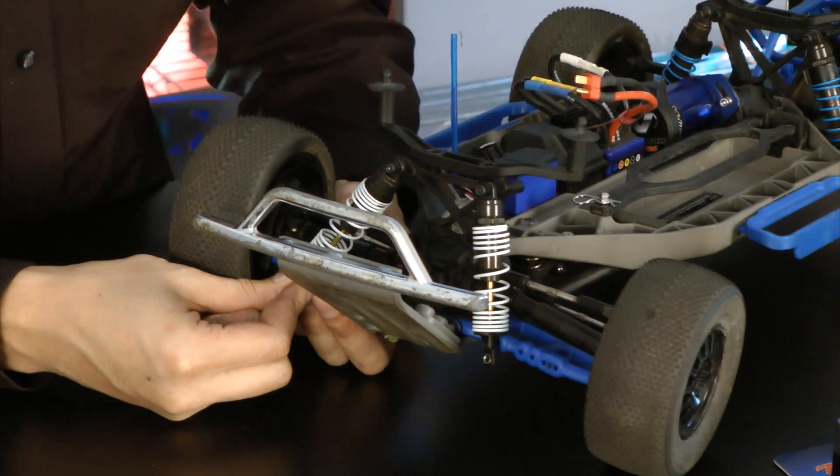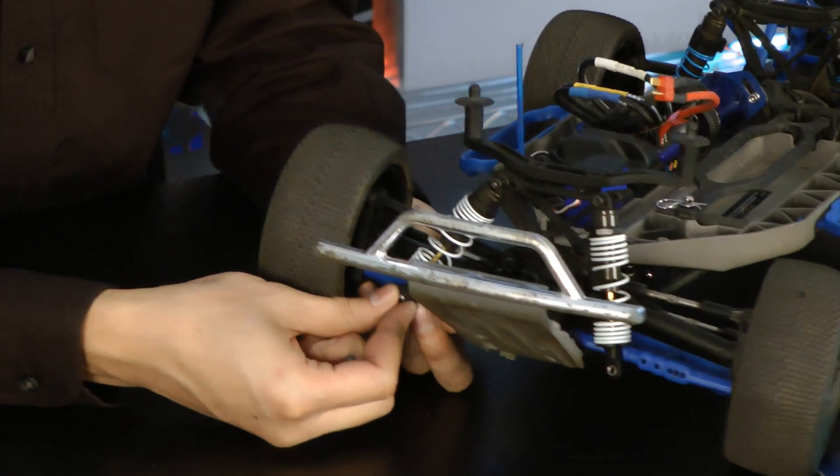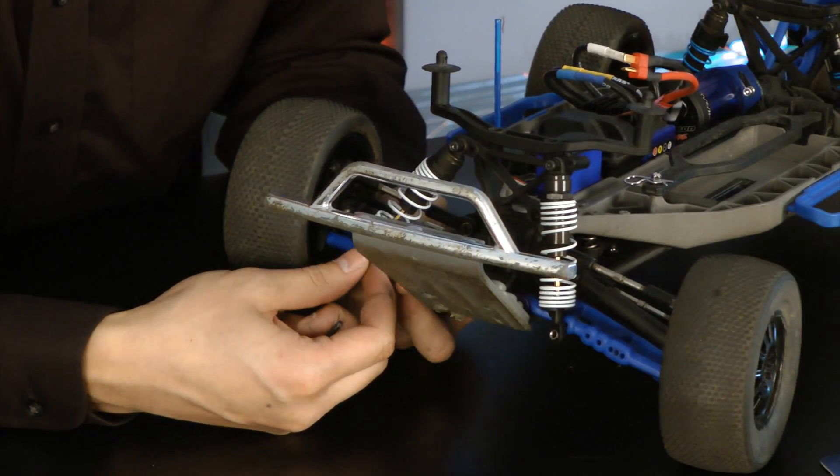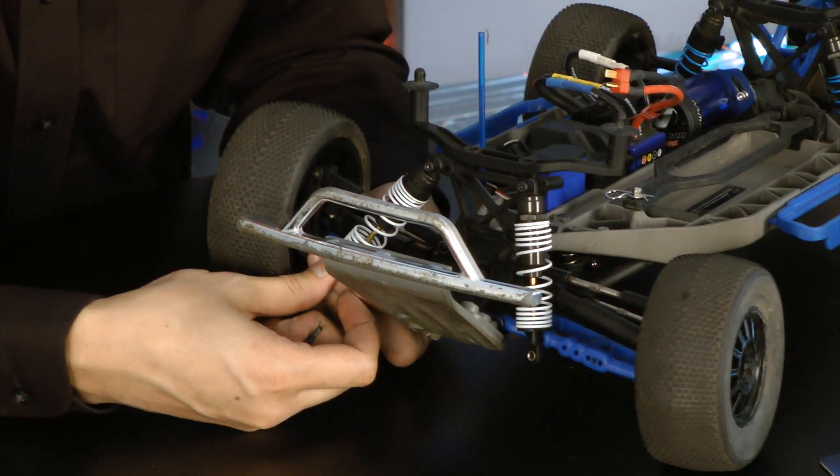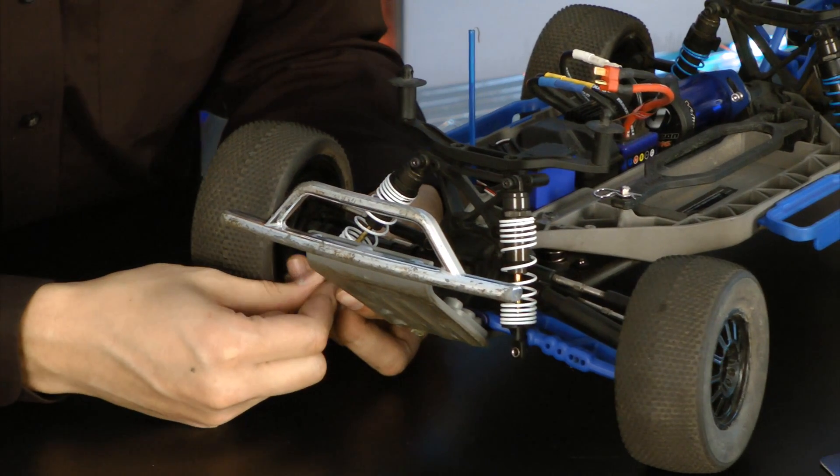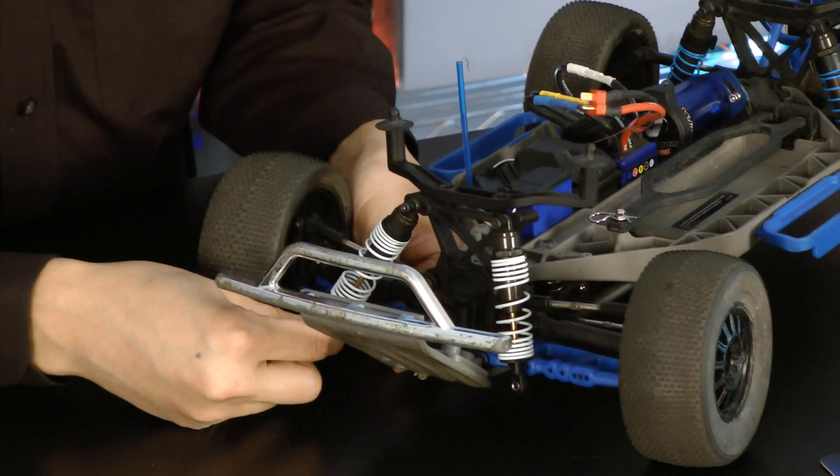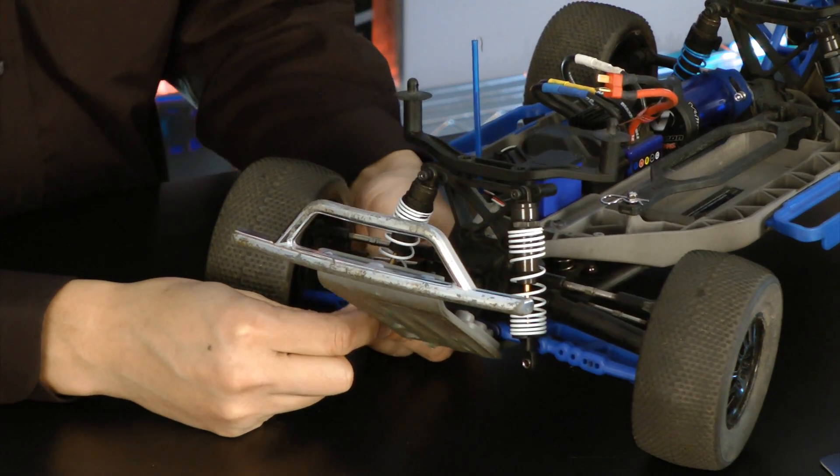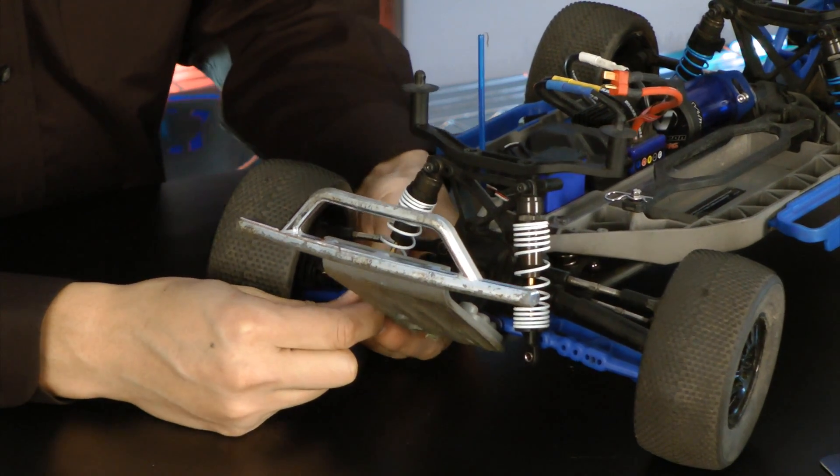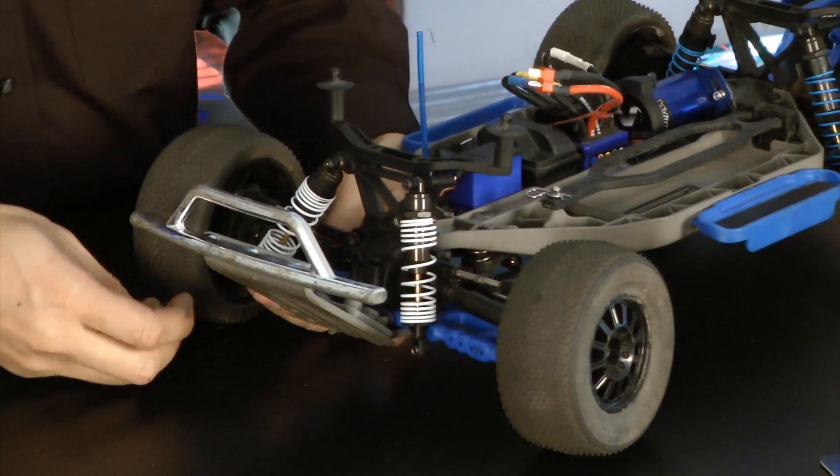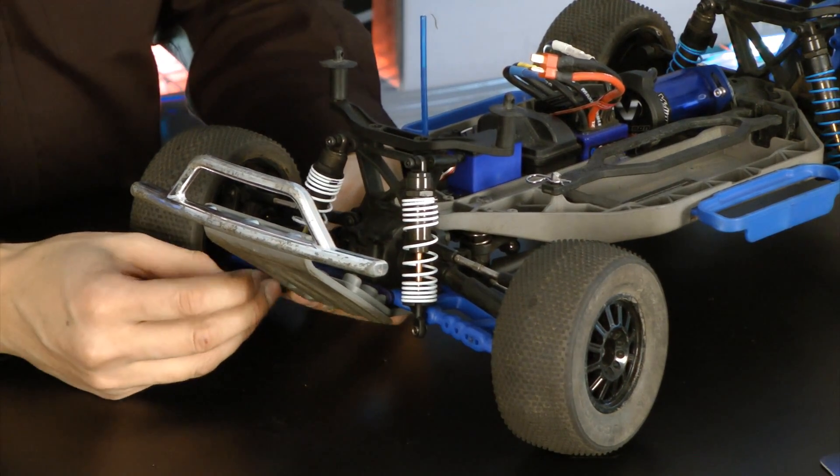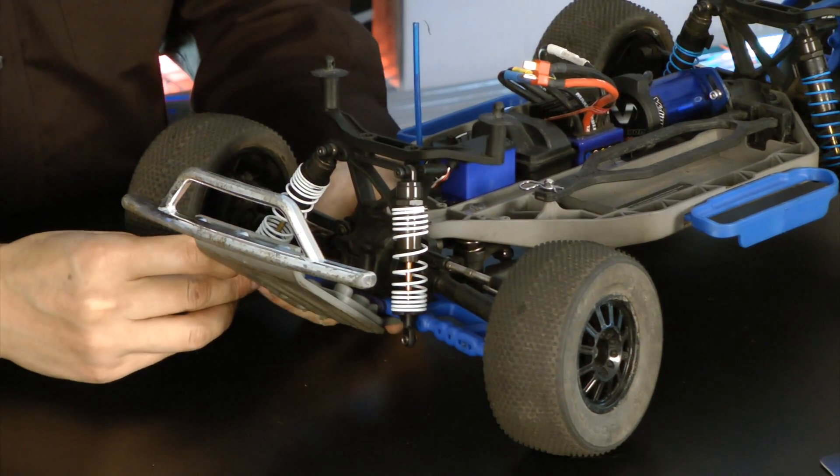So you can install the shock on the far mounting position there to give you better stability and lower ground clearance. Or you can put them in closer to the center to give you a bit higher clearance. But then your truck will be a little bit unstable comparatively.